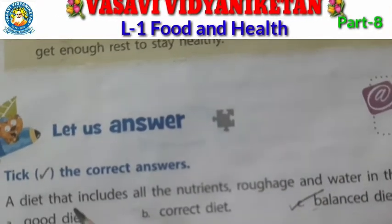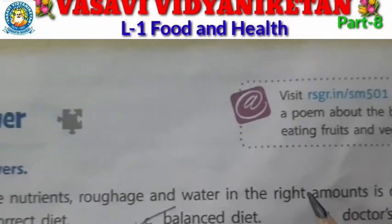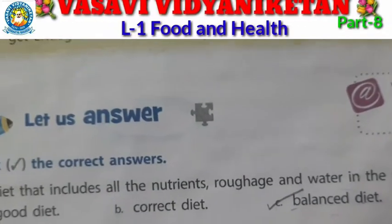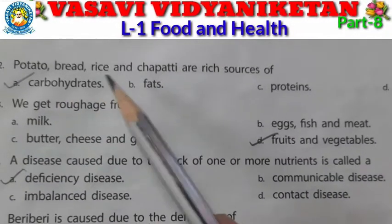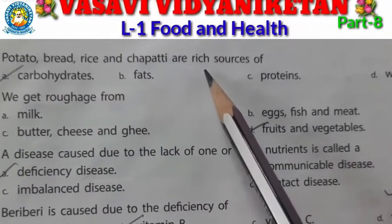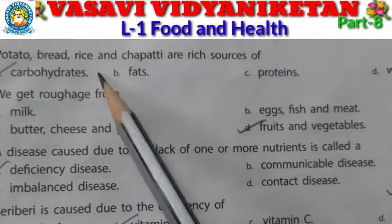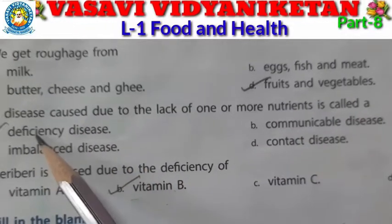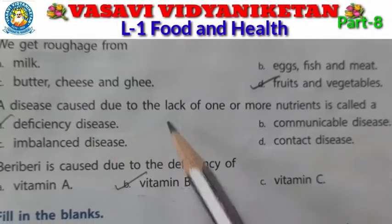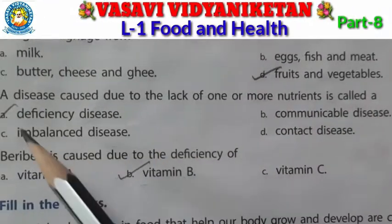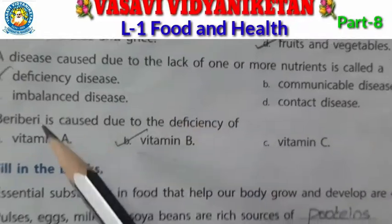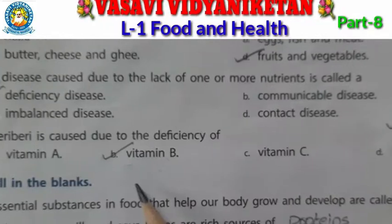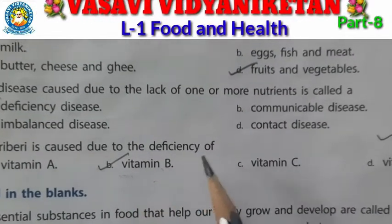Let's review the answers once more. Q1: balanced diet. Q2: potato, bread, rice and chapatis are rich sources of carbohydrates. Q3: we get roughage from fruits and vegetables. Q4: deficiency disease. Q5: beriberi is caused due to the deficiency of vitamin B.